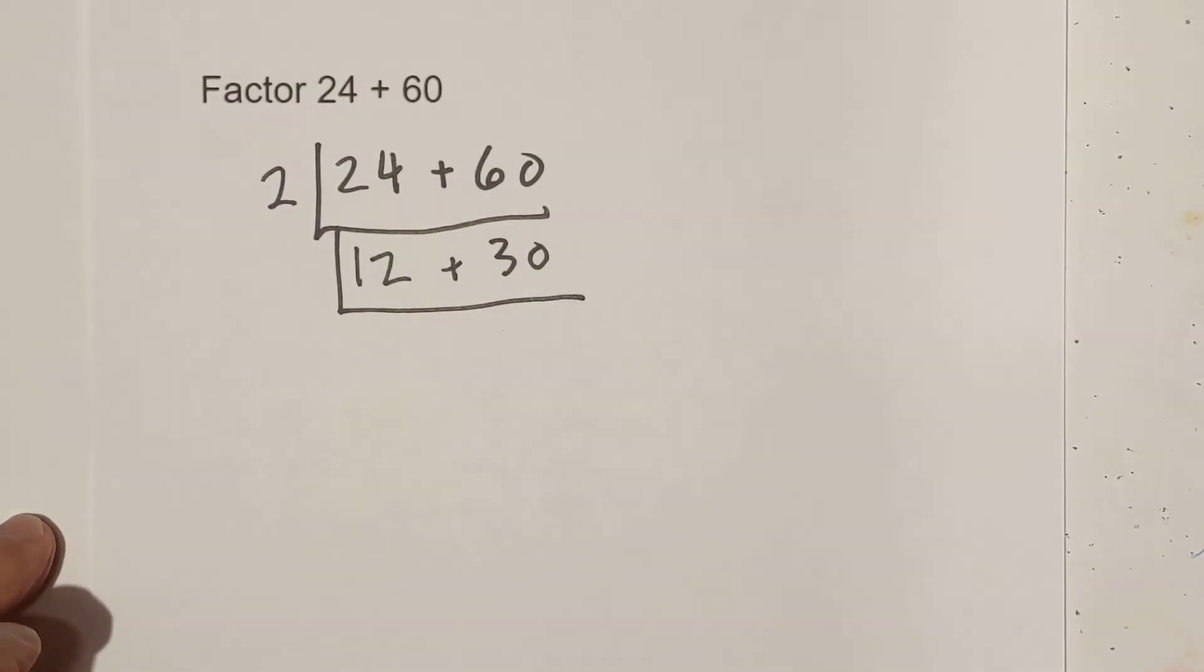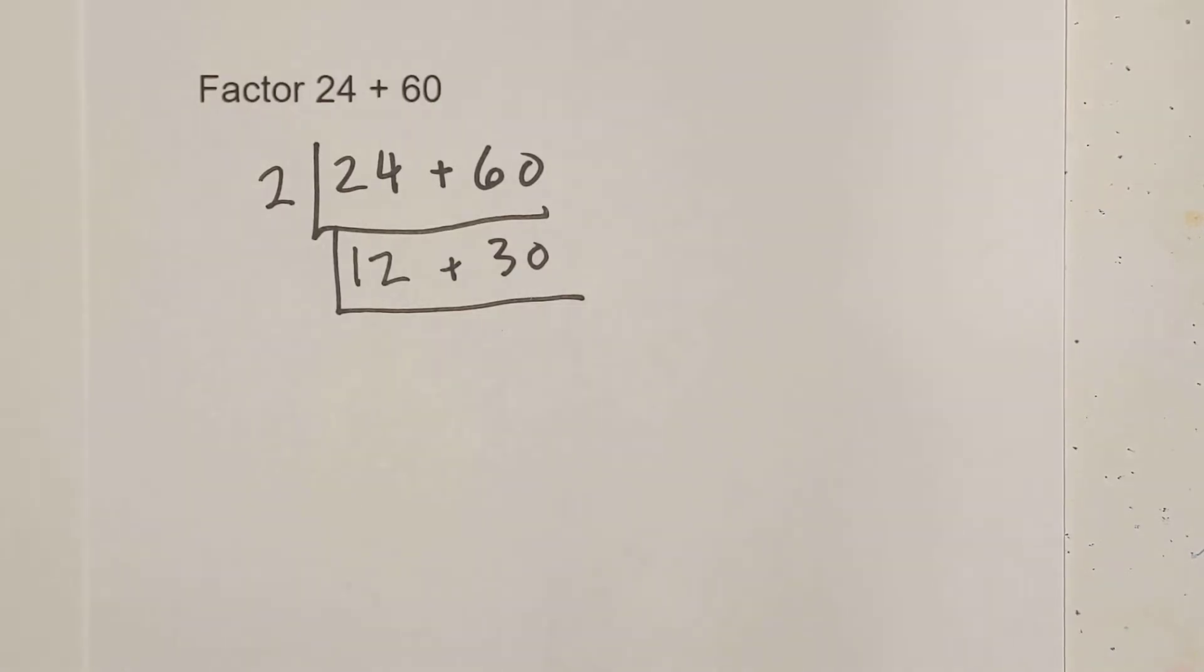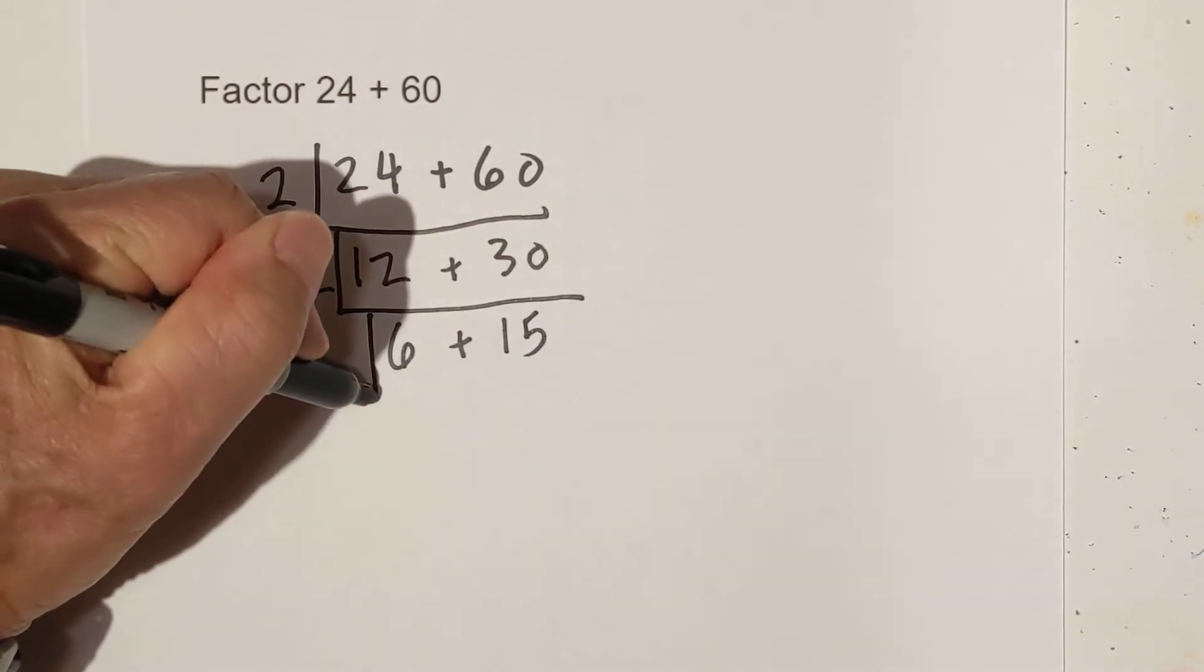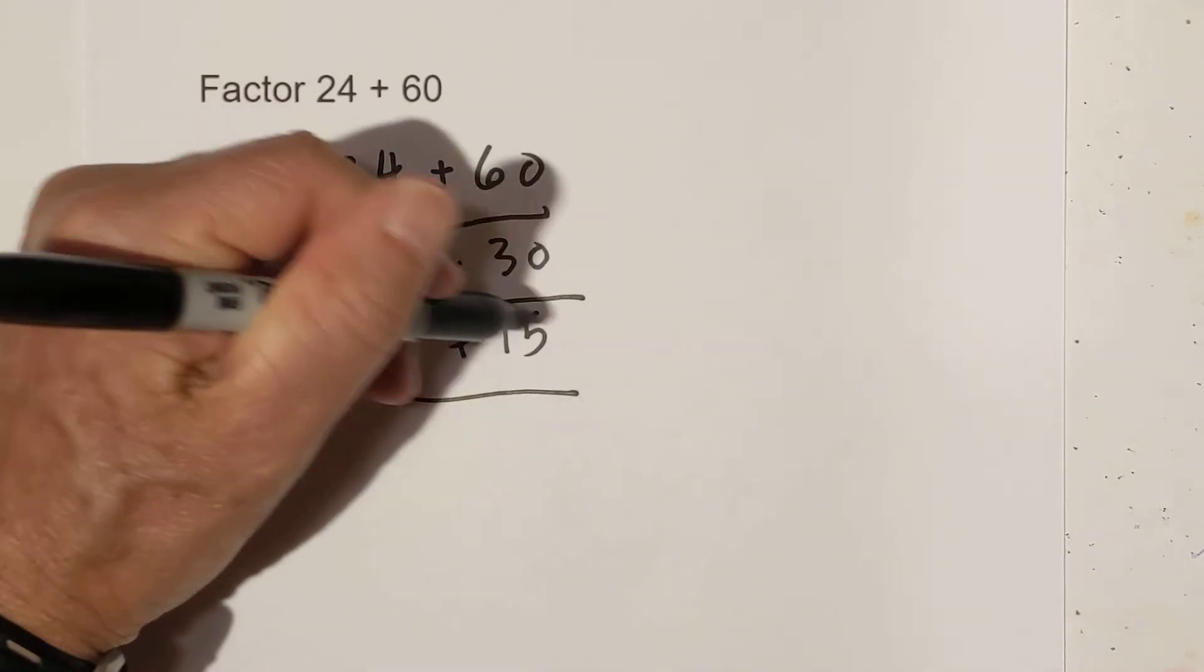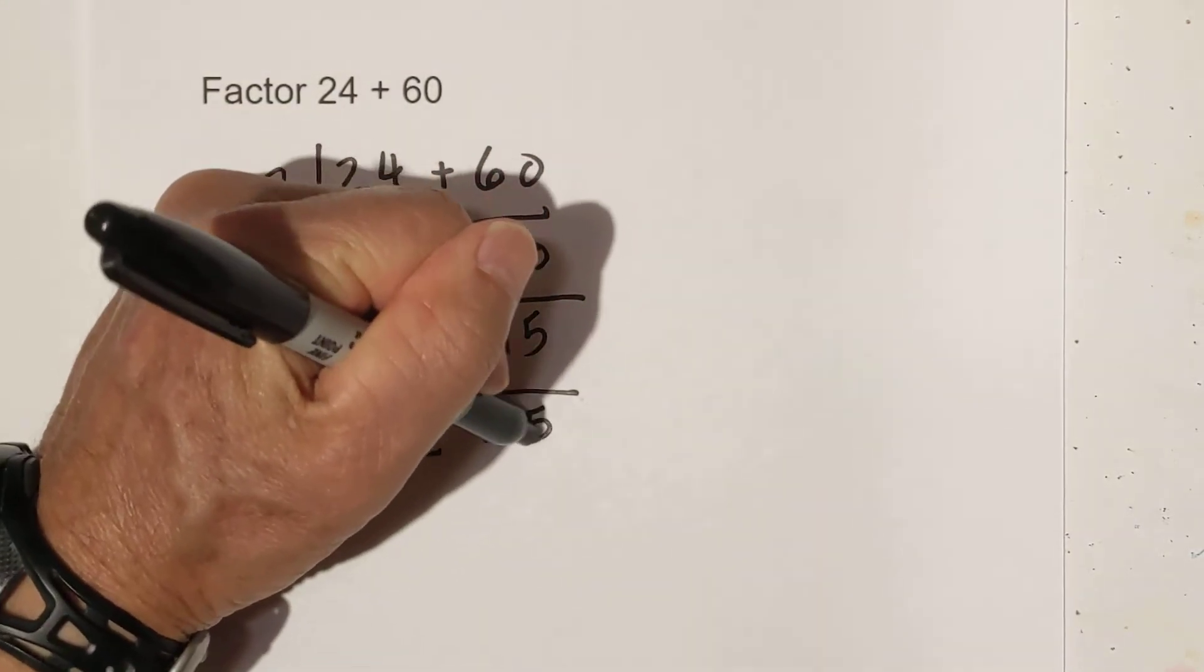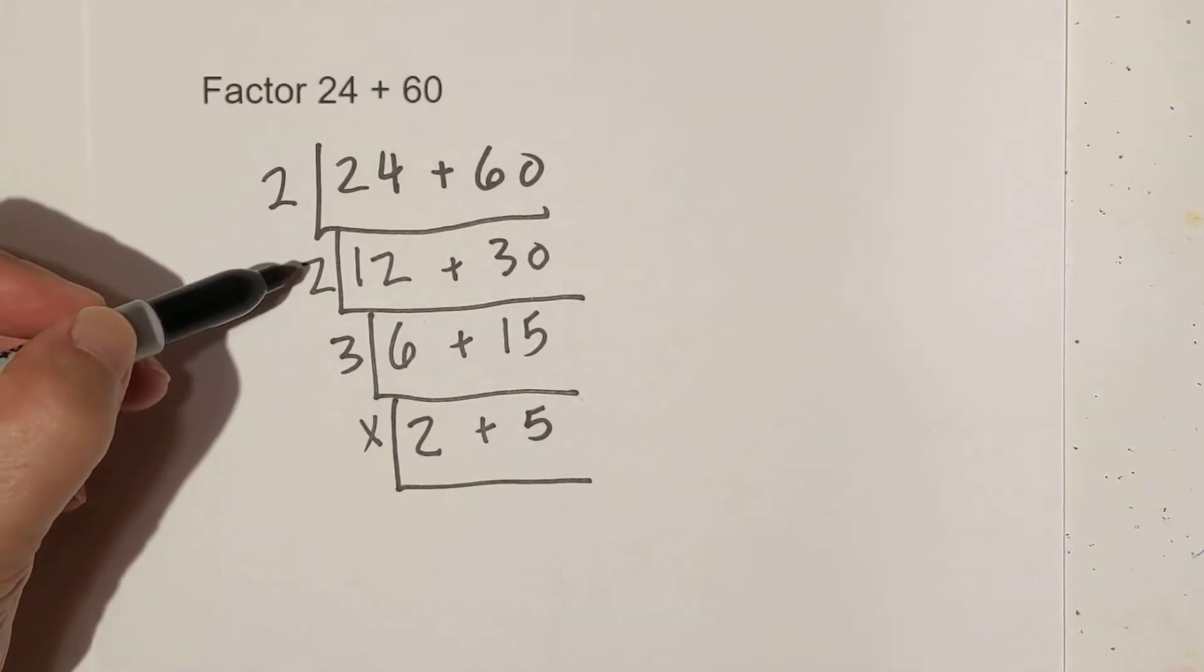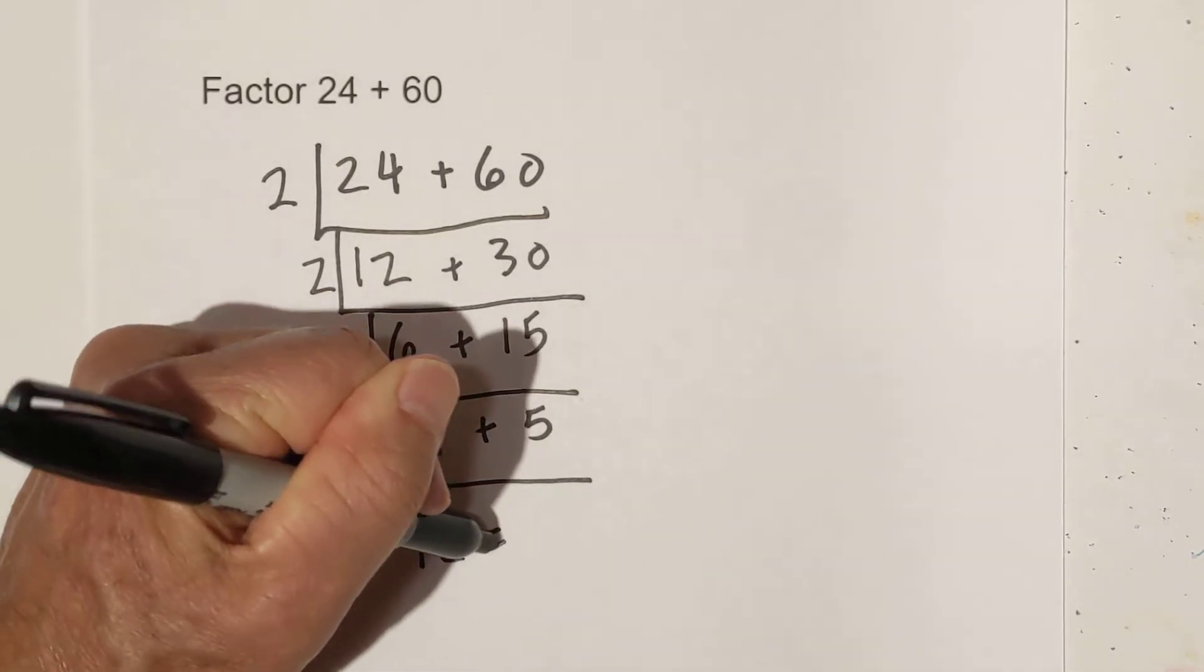And now we have what will go into 12 and 30. Let's see. I think let's just go with two. That's six plus 15. And then for this one, we have three will go into three and 15. And that's two plus five. Two is a prime number. So we're done with these. Multiply these together. Two times two is four plus three is 12. So the GCF equals 12.